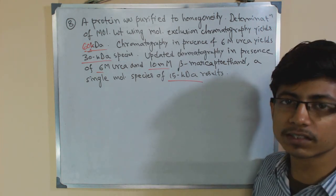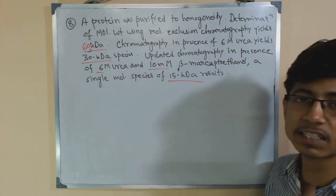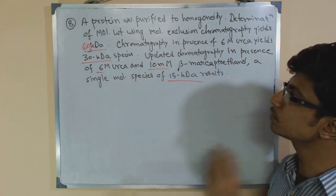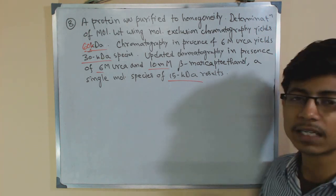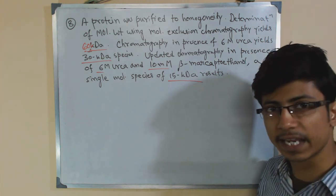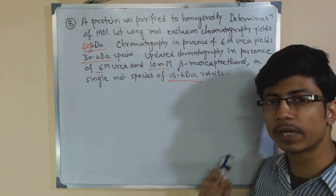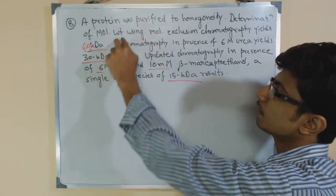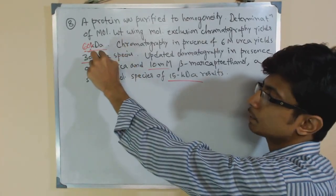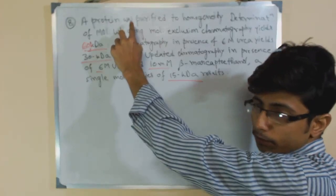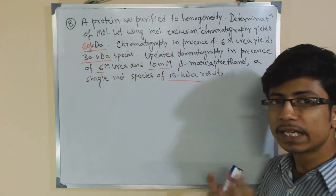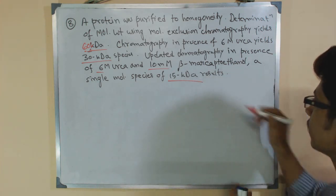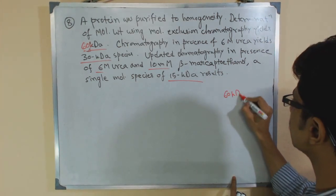Second, determination of molecular weight using size exclusion chromatography gives a 60 KDA species. After size exclusion chromatography, we get one protein only and that is 60 KD. So obviously the protein weighs 60 KD — it is a pure protein, already purified. The main protein is 60 KDA.